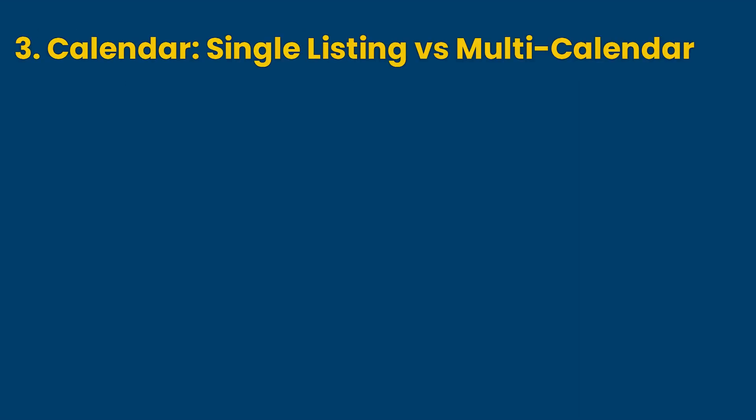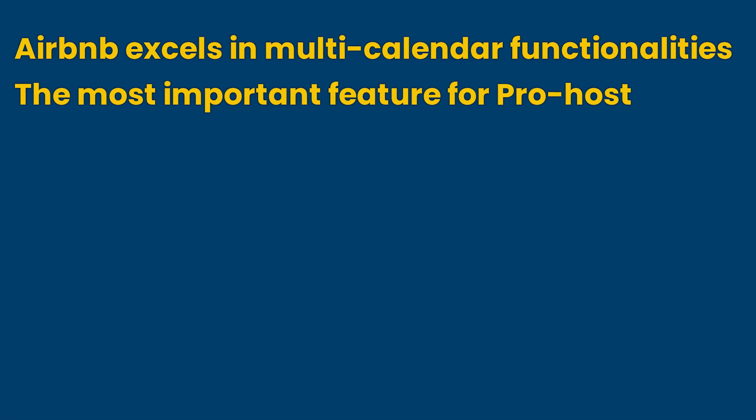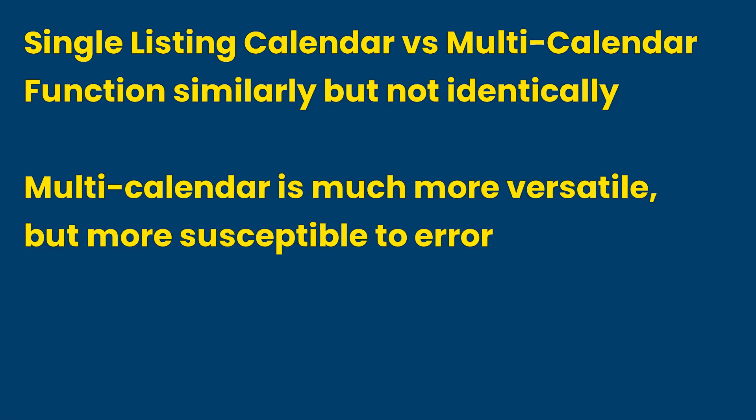Point three: navigating the calendars. Airbnb offers two calendar formats — the listing calendar for a single listing at a time, and the multi-calendar for displaying multiple listings jointly in matrix form. The multi-calendar is a distinct feature offered by Airbnb and is one of the most significant features in Airbnb's professional hosting tools. Hosts need to qualify and proactively request these professional hosting tools from Airbnb. While the two calendar types are theoretically similar, their functions are far from identical, and the multi-calendar is much more versatile but also more susceptible to errors.